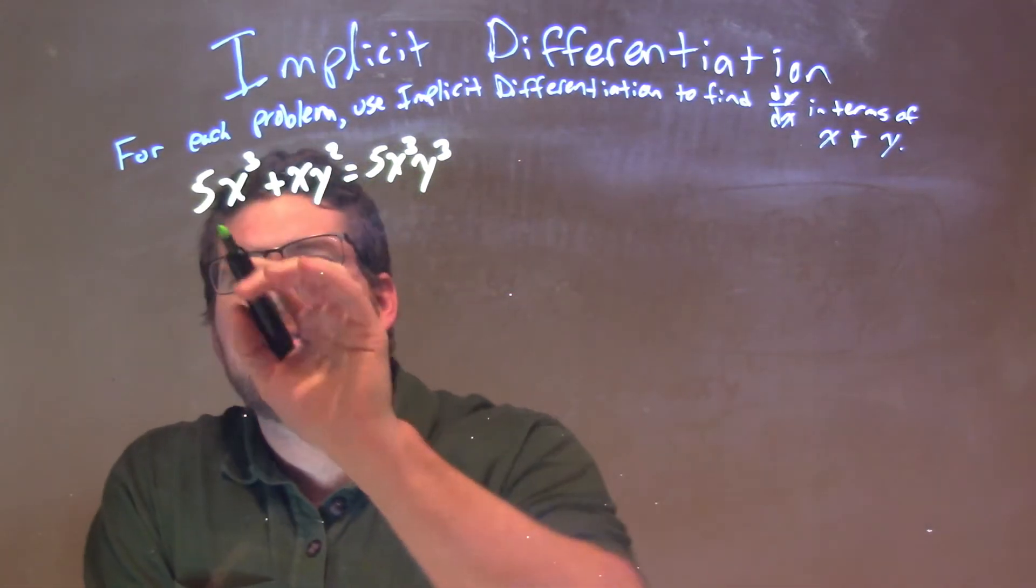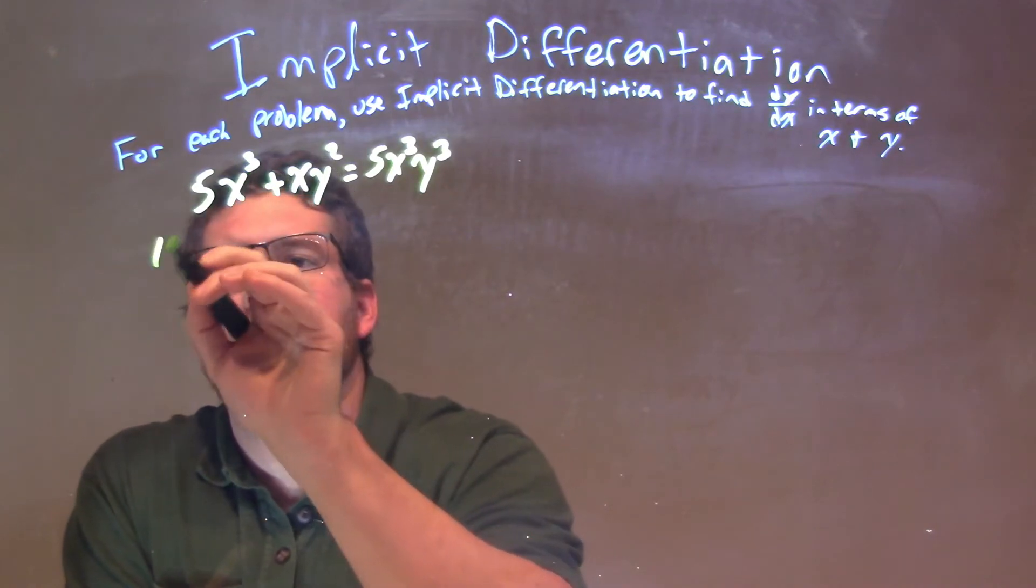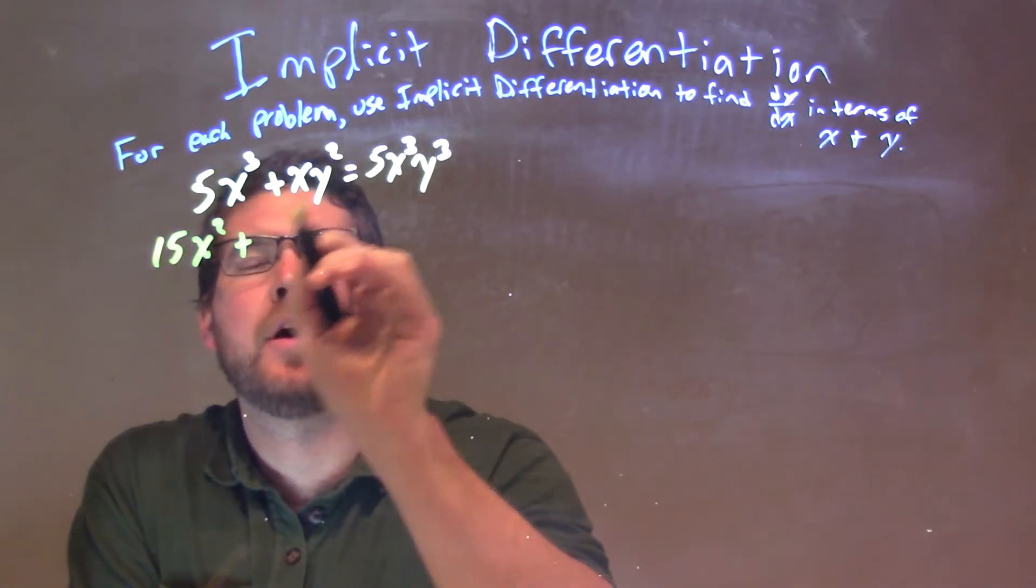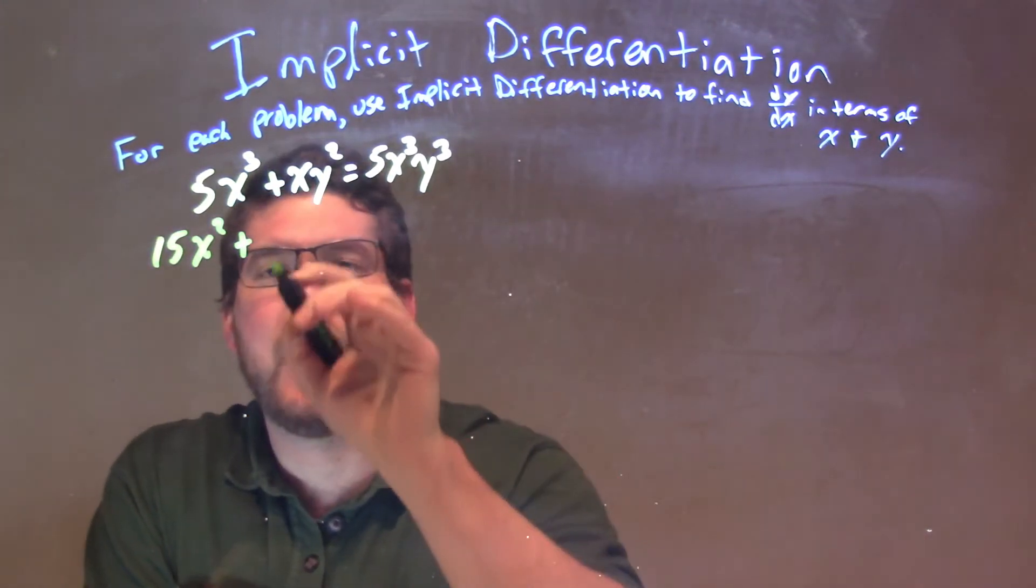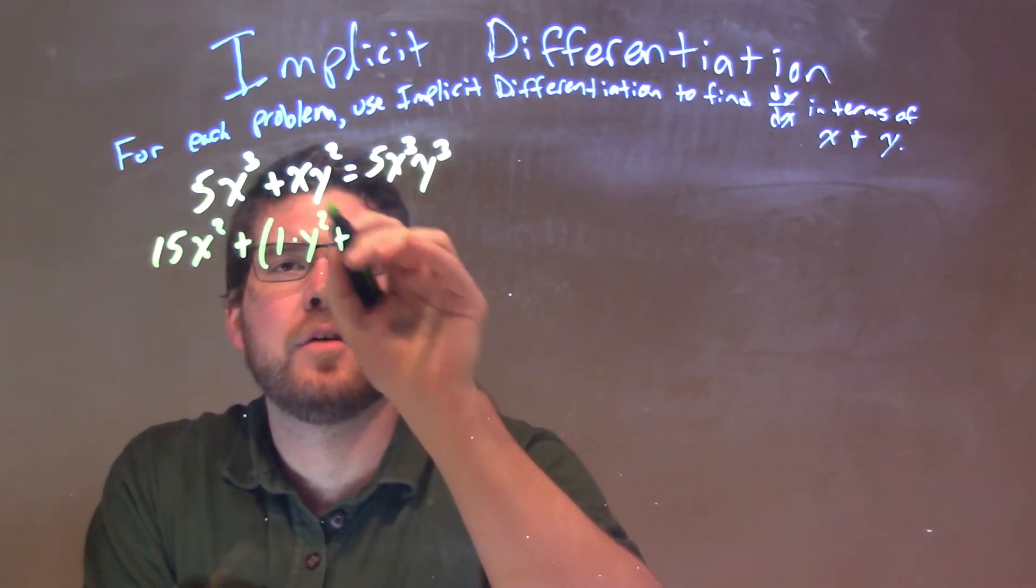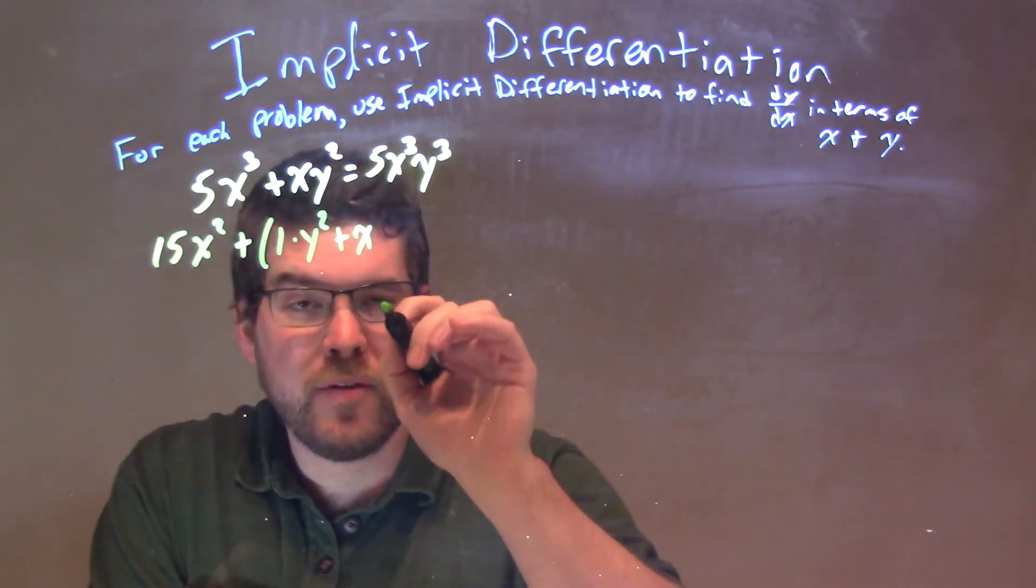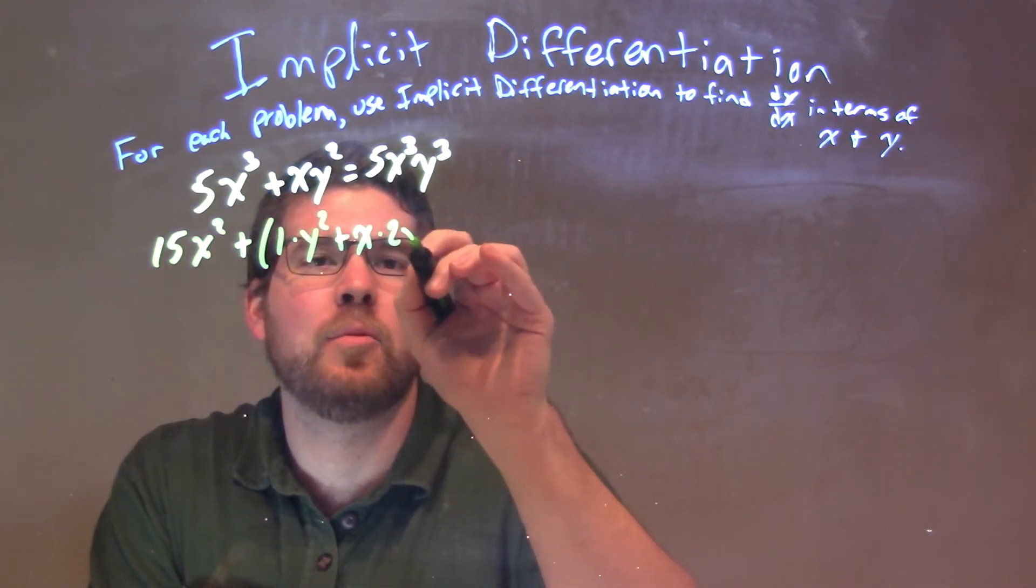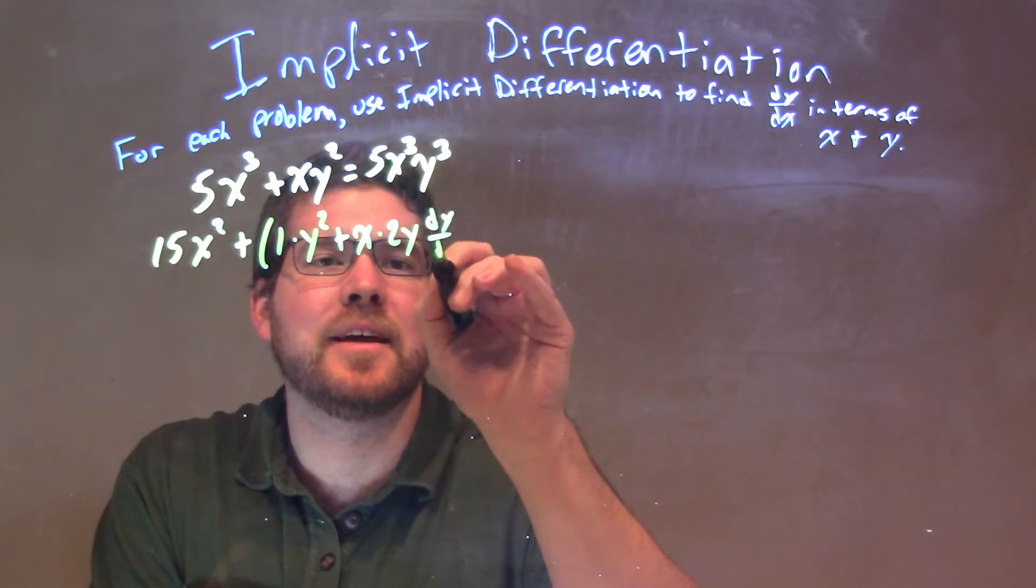Well, left-hand side is pretty easy. 5x to the third, 15x squared, plus here we use the product rule where the x is just 1. So, we have 1 times y squared plus x times the derivative of y squared, which is 2y dy/dx.